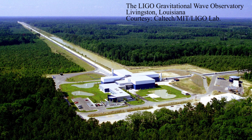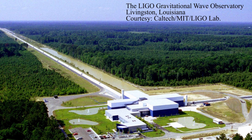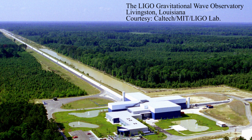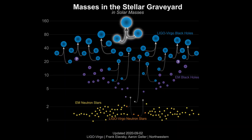We now know of much bigger black holes than Cygnus X-1. We have even detected the space-time ripples produced by the cataclysmic collisions and mergers of pairs of black holes. The first such signal was detected in September 2015 by LIGO in the United States, and gravitational wave observatories are now routinely detecting these signals. So far, the biggest black hole merger detected was between black holes of 66 and 85 solar masses, producing a 142 solar mass black hole — about seven times the size of Cygnus X-1.